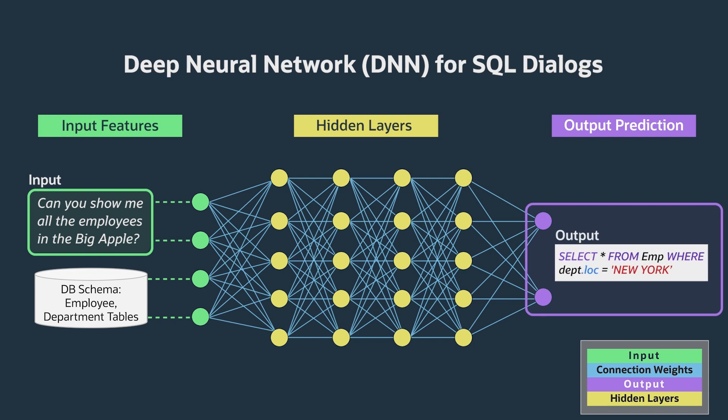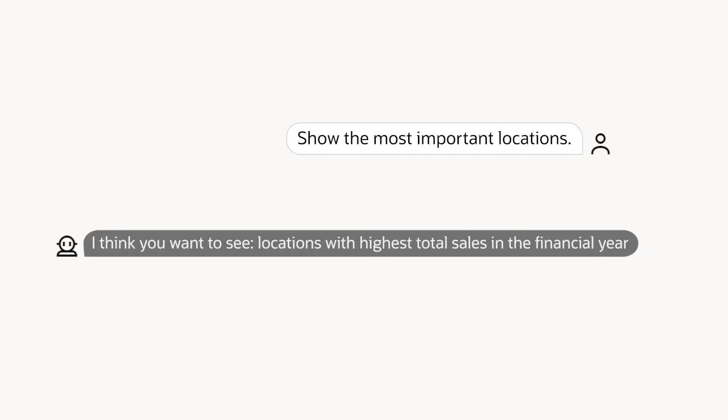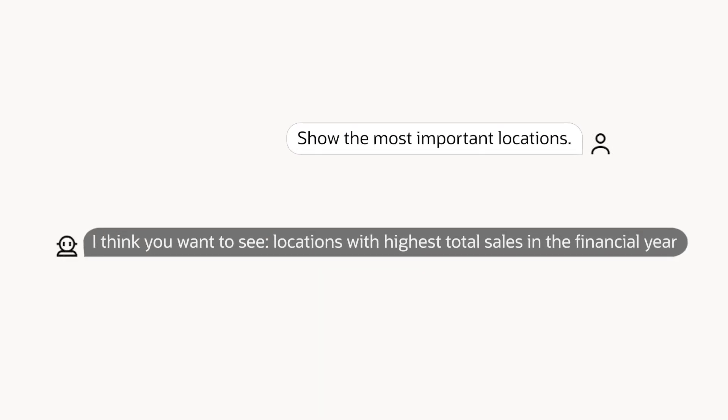For our SQL Dialogs product, we do allow customers to optionally provide around 100 examples, and this lets customers support any unusual terminology they may require. For example, this would let the customer make 'show the most important locations' translate into a SQL query for the highest total sales in the financial year.